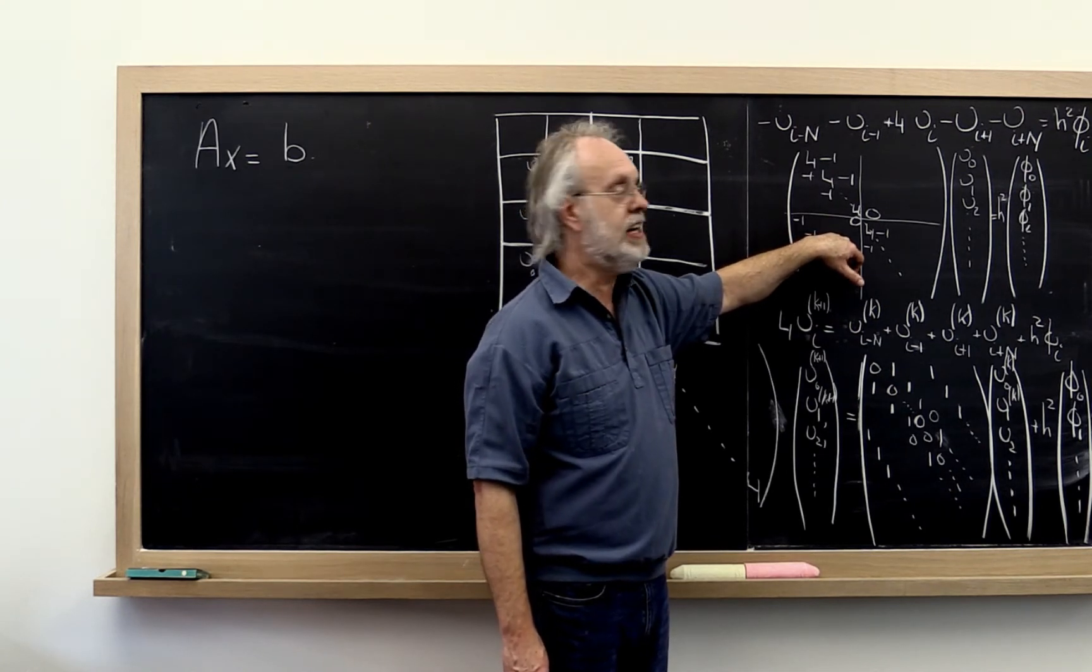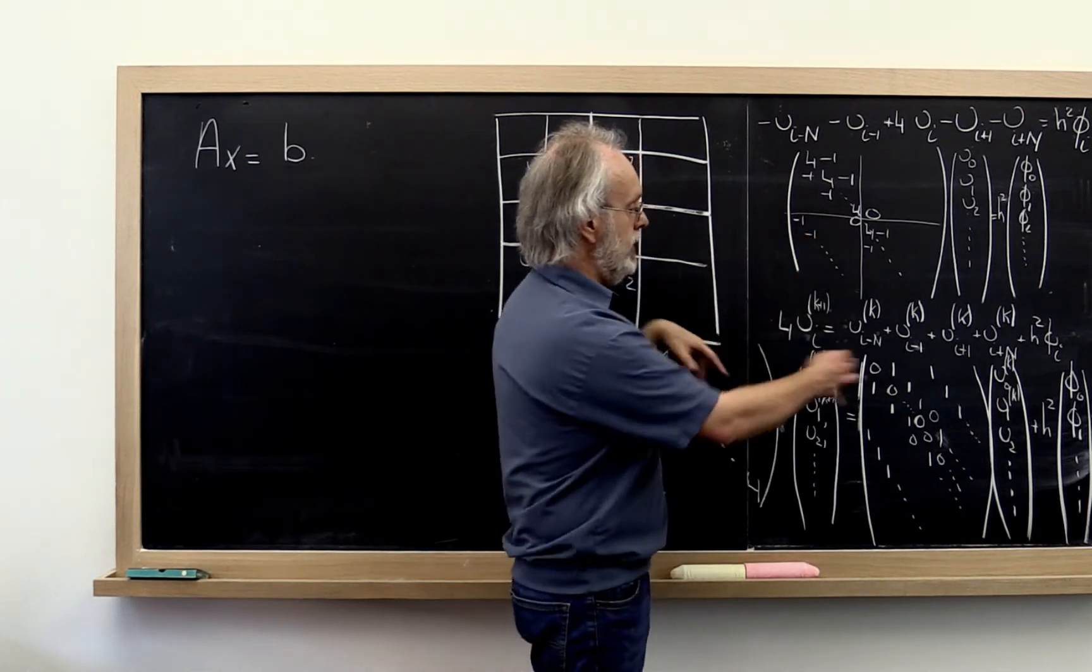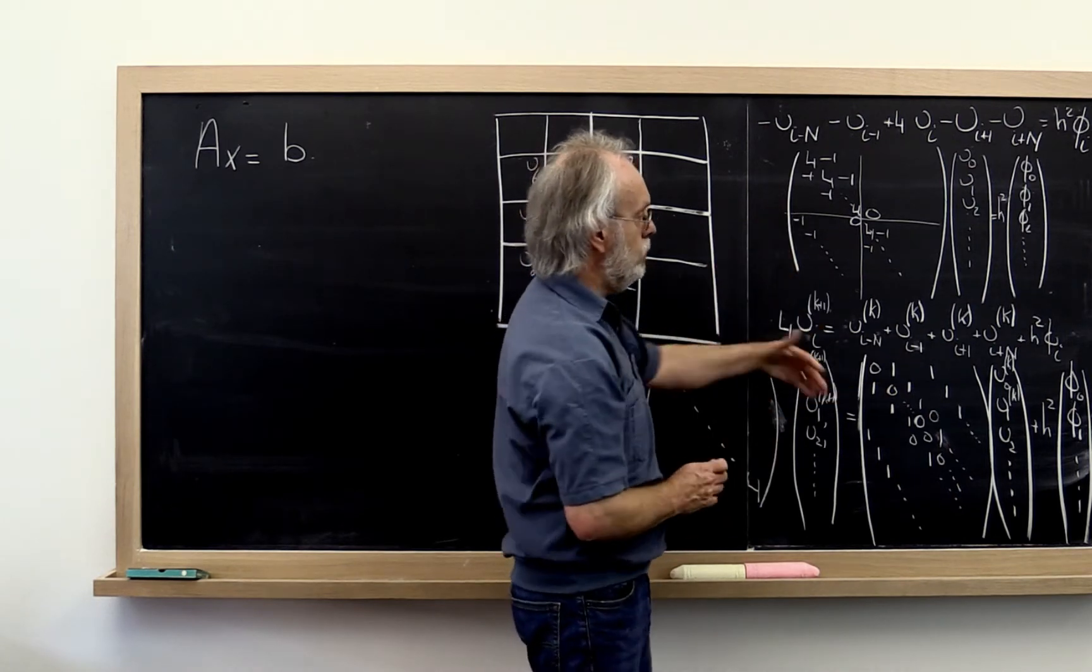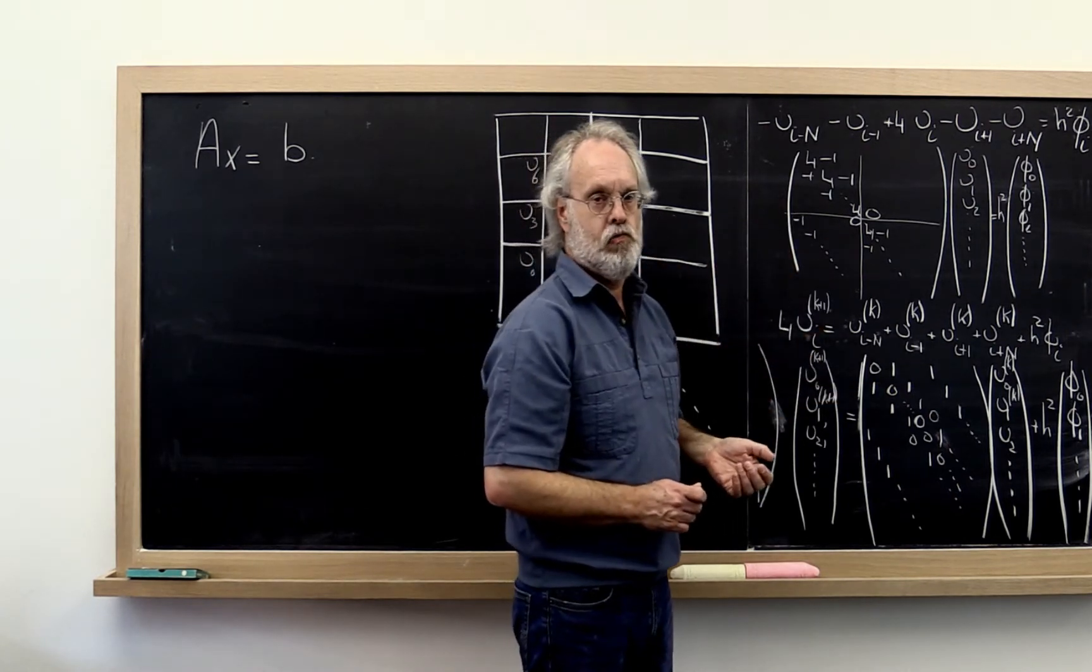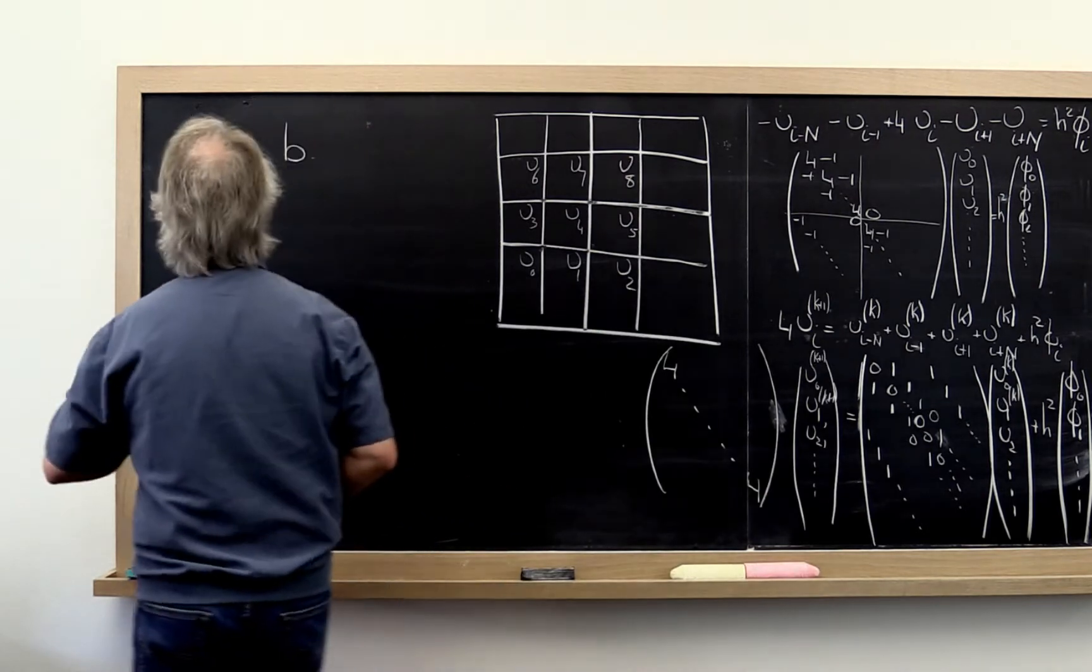So it's almost like you took this matrix, you split it up, and then you pushed one side to the right and one side to the left. How can we do that here?